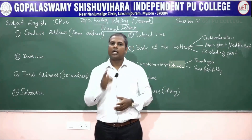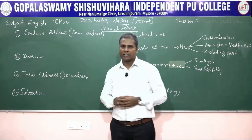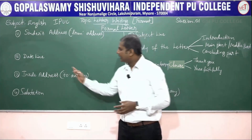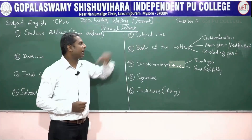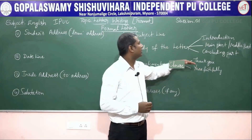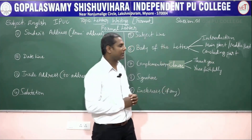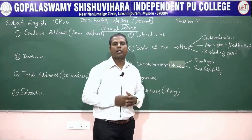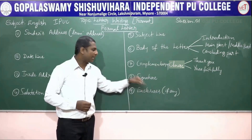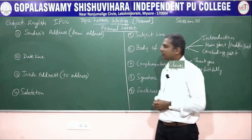A formal letter includes nine elements. The first is the sender's address — what we call the from address. The second is the date line. The third is the inside address — the to address. Next comes the salutation, then the subject line, then the body of the letter divided into introduction, main part, and concluding part. After that you have the complementary close — 'thank you' and 'yours faithfully' — then the signature, and finally enclosures if any.